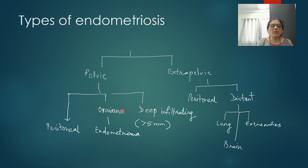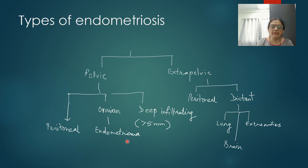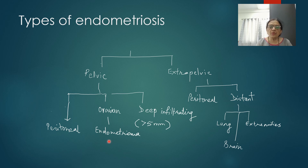Second, there can be presence of an ovarian mass because of endometriosis — ovarian endometriosis is called an endometrioma. Previously it was called a chocolate cyst, but the better terminology is endometrioma, because the chocolate-colored content of cyst fluid can also be seen with functional ovarian tumors or cystadenomas whenever there is bleeding and absorption of fluid. So chocolate cyst was used previously but now endometrioma is more commonly used.